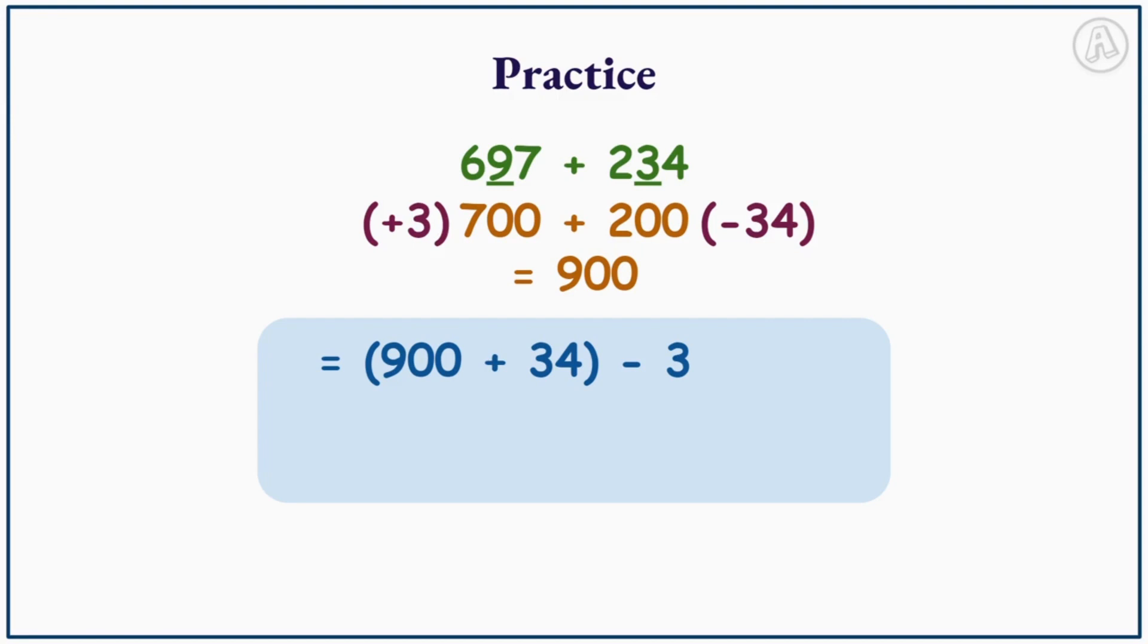So since we added 3, we now need to subtract 3. And since we subtracted 34, we now need to add 34. So 900 plus 34 equals 934 minus 3 equals 931.